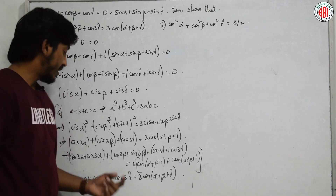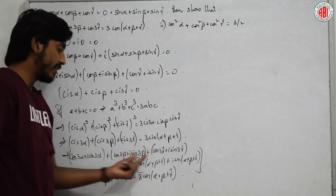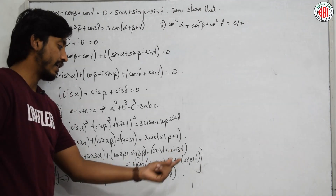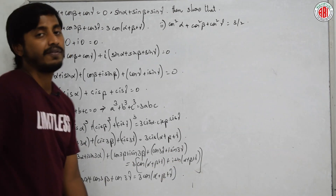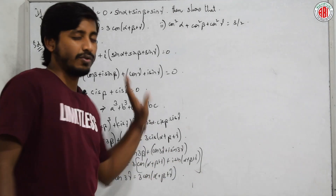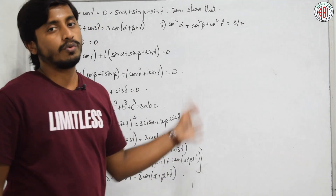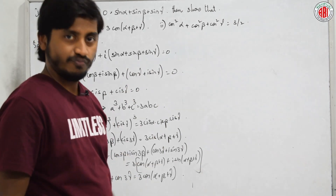Taking the imaginary part gives sin(3α) + sin(3β) + sin(3γ) = 3sin(α+β+γ). Even if asked to prove this result, you should be able to do so.